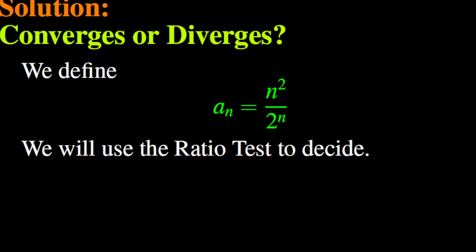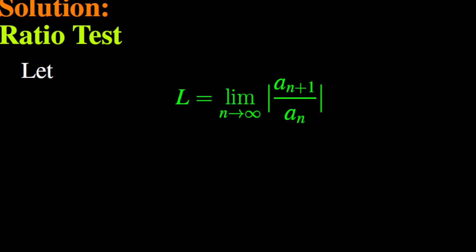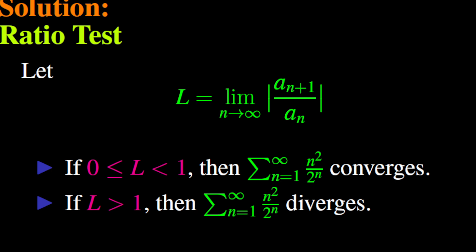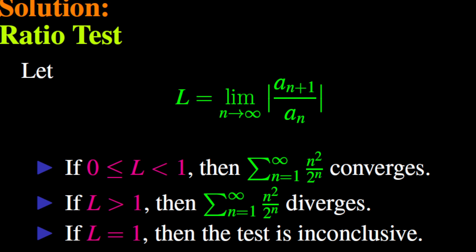We will first study the convergence of this series. The main tool we will use to determine if the series converges or not is the ratio test. We define the sequence a_n as follows: a_n equals n squared over 2 to the power n. Let us review the ratio test. Let L be the limit as n goes to infinity of the absolute value of a_{n+1} over a_n. The series converges if L is greater than or equal to 0 and strictly less than 1. The series diverges if L is strictly greater than 1. The test is inconclusive if L equals 1.